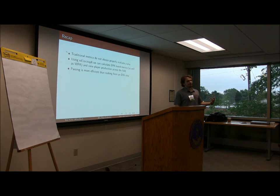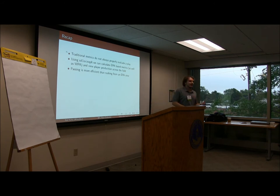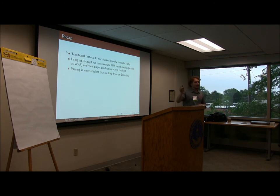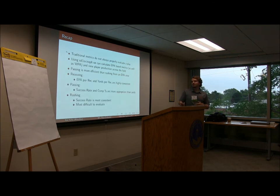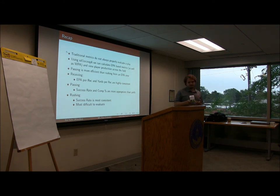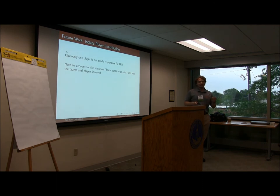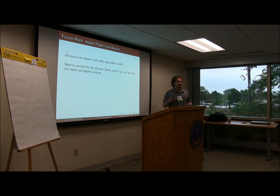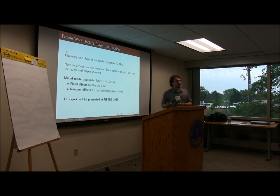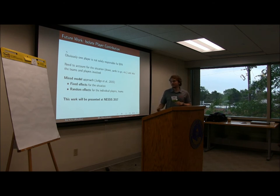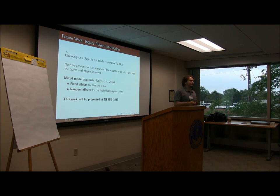To recap: traditional metrics are not actually properly evaluating a play. Using NFL Scraper, we calculate expected points added — the package lets you download data to get EPA for every play as well as win probability added. Passing is more efficient from an expected points standpoint. These metrics are much more consistent across each of these types of plays. Going forward, to isolate a player's contribution, we need to account for the situation and the people involved — that's a mixed model approach, with fixed effects for the situation and random effects for individual players and teams. This is work we're presenting at NESSIS in September.